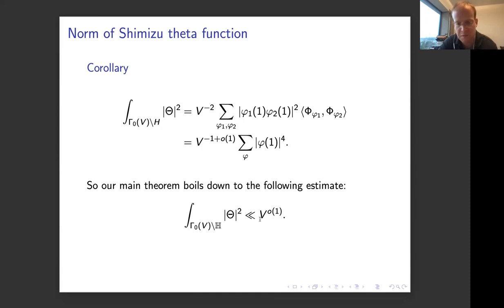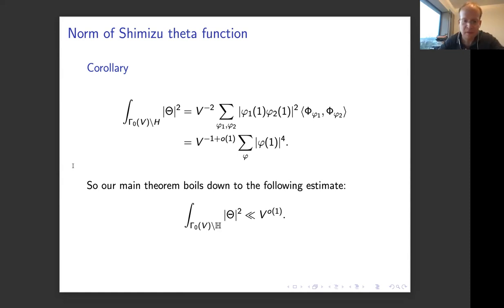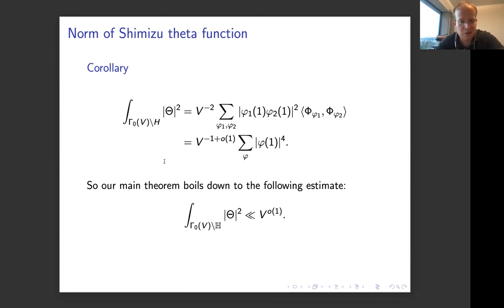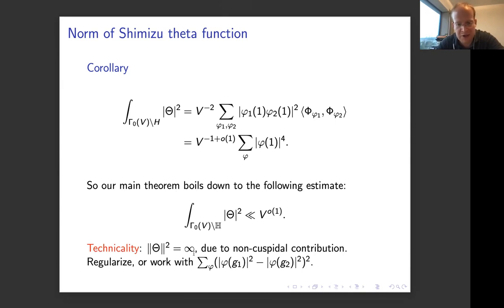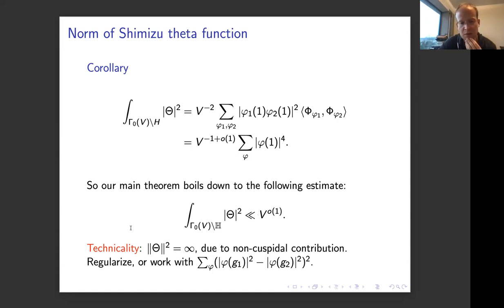The proof of the lemma is simple: take the pre-trace formula, multiply by e(nz), and sum over n — on the right-hand side we get the Jacquet-Langlands lifts, on the left-hand side we get the Shimizu theta function. Taking the L2 norm of the theta function, expanding as a double sum and using the orthogonality, we end up with the fourth moment of values up to normalizing factors. This is the basic identity, using the pre-trace formula and the multiplicity one theorem. What remains is to prove the bound for the L2 norm of the theta function.